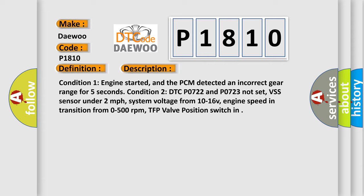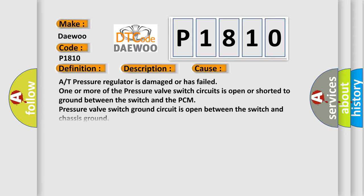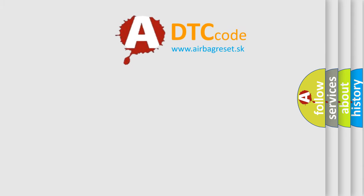This diagnostic error occurs most often in these cases: AT pressure regulator is damaged or has failed, one or more of the pressure valve switch circuits is open or shorted to ground between the switch and the PCM, pressure valve switch ground circuit is open between the switch and chassis ground PCM. The Airbag Reset website aims to provide information in 52 languages.